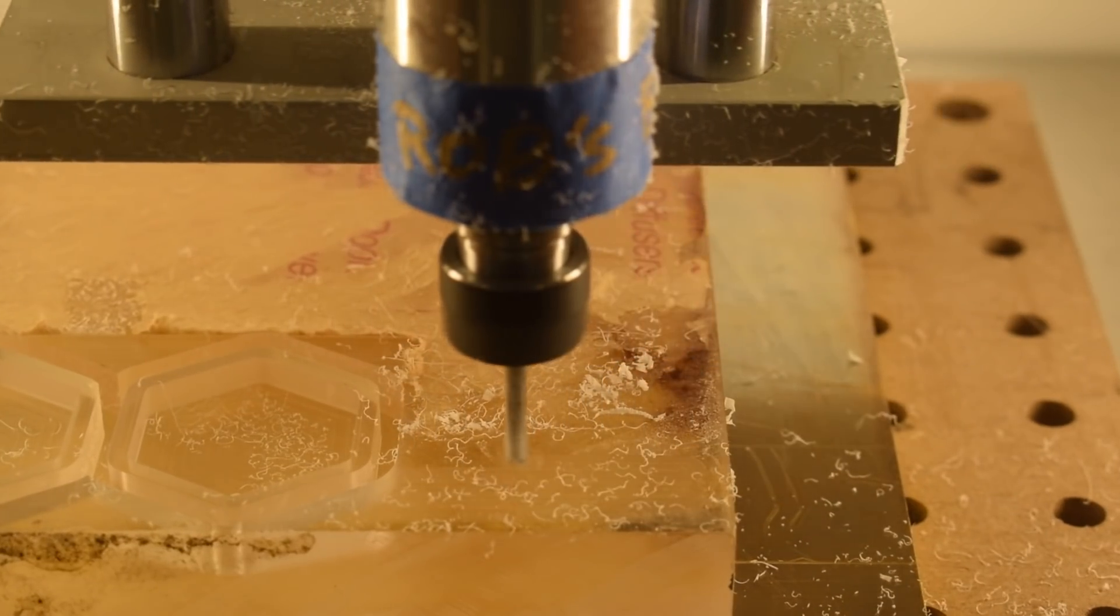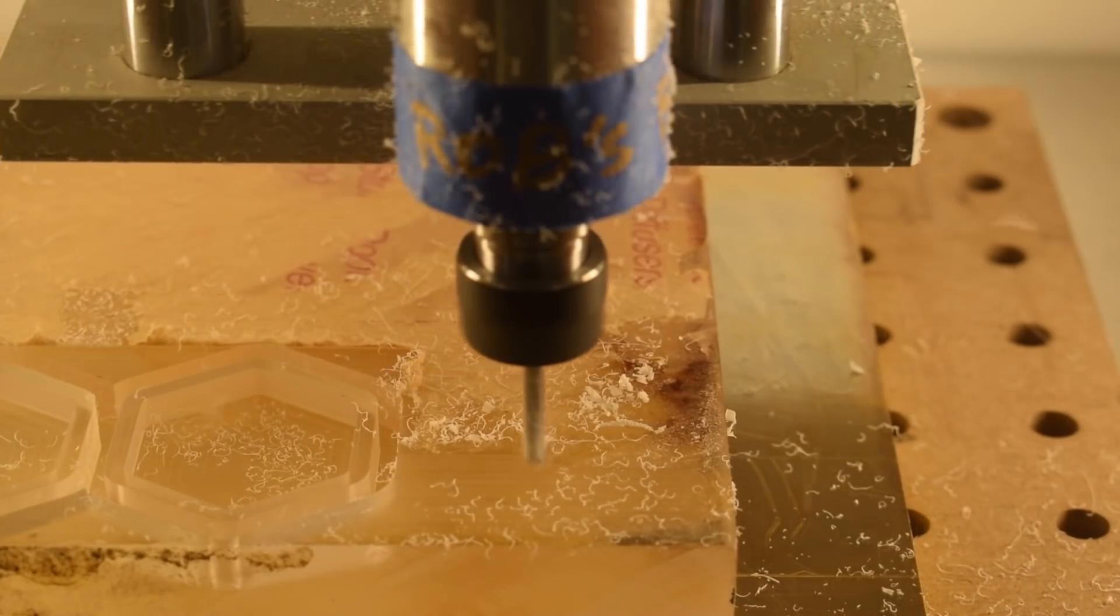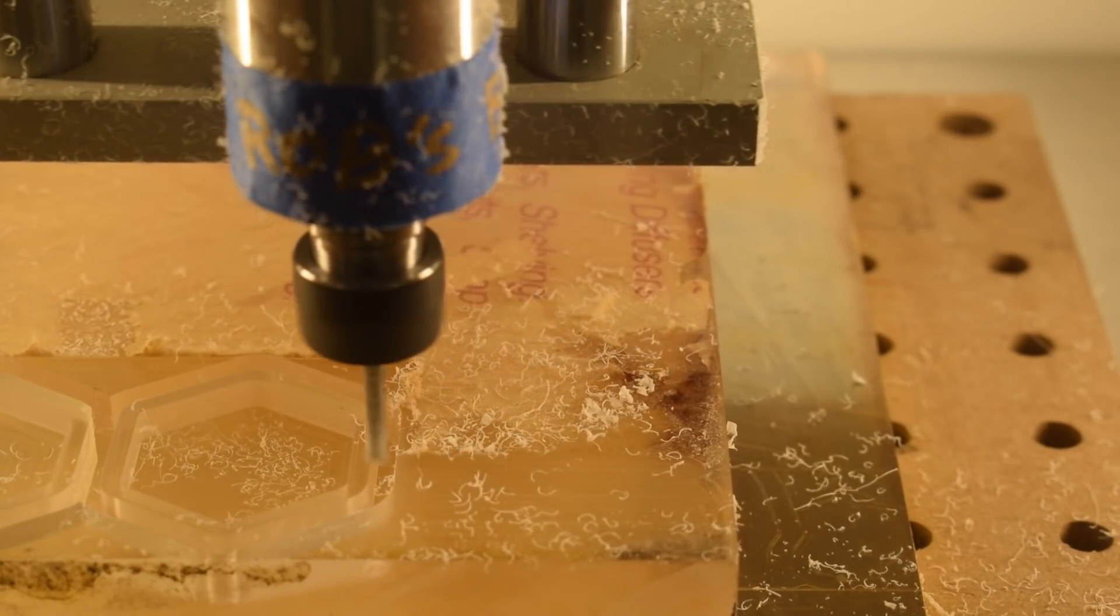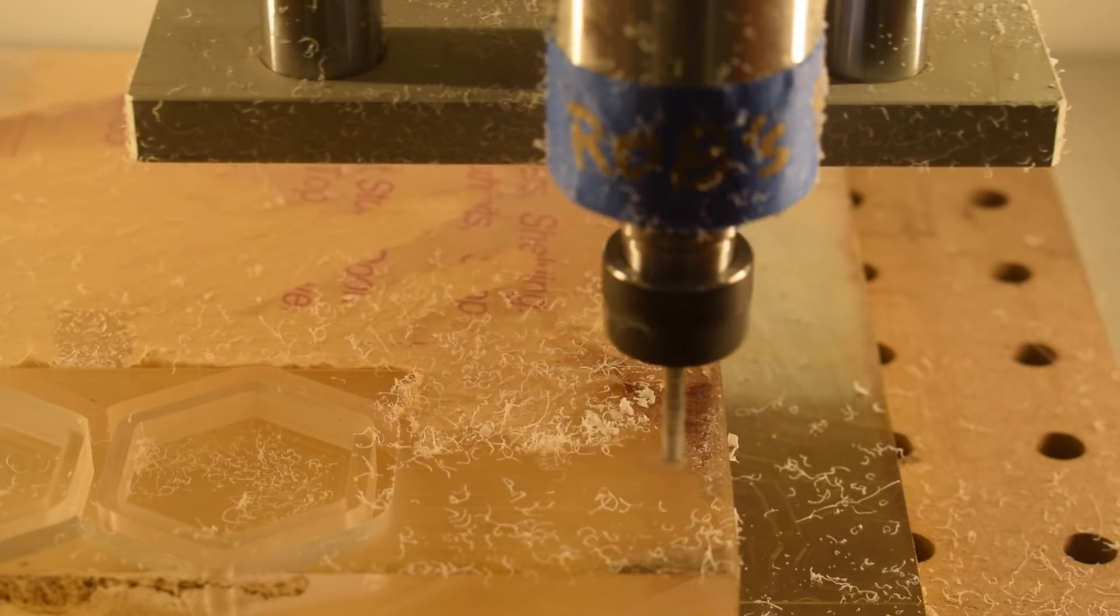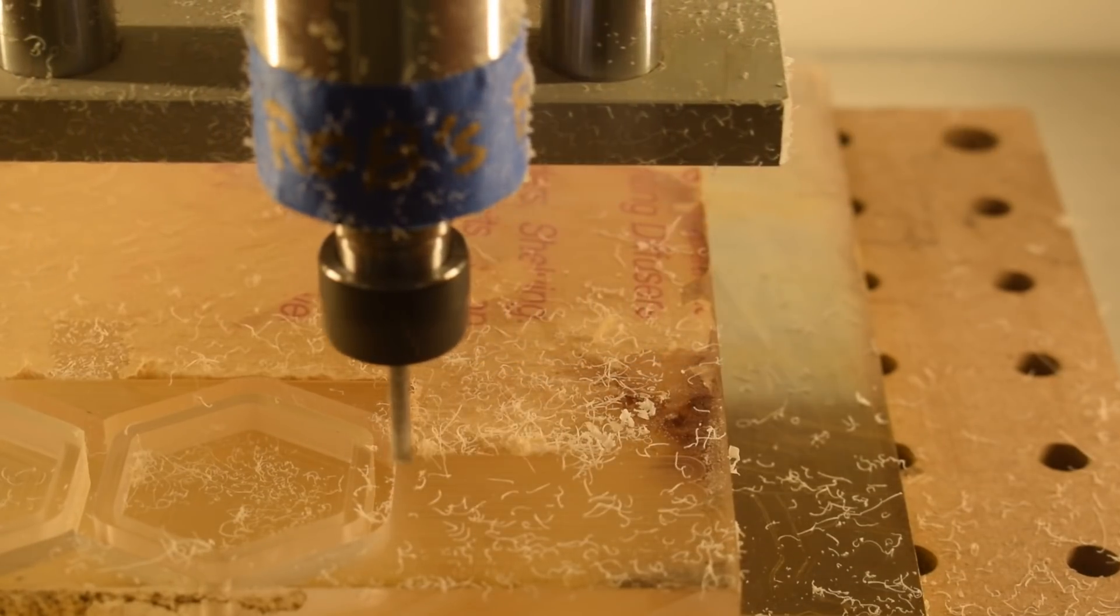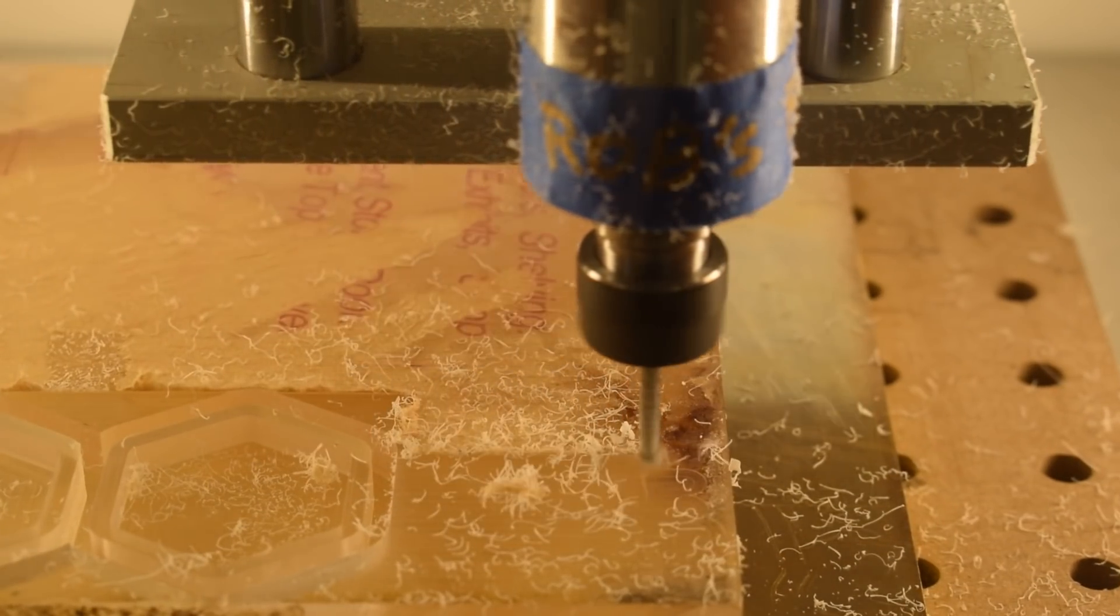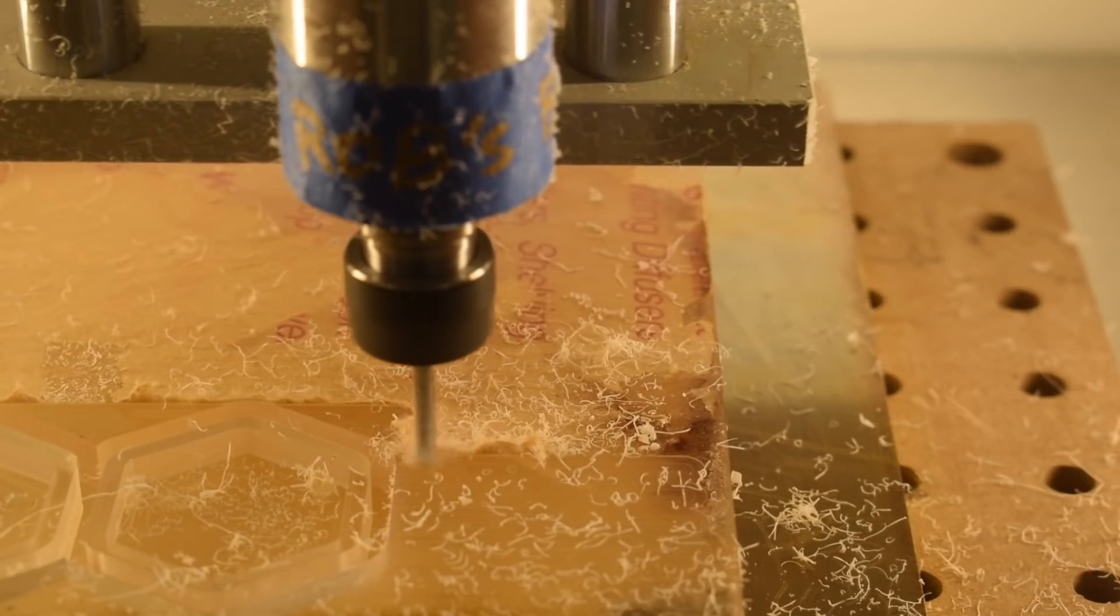Today on the Nomad, I've got cast acrylic on the cutting board. Compared to the extruded flavor of acrylic, it's better for subtractive manufacturing purposes because it can get a couple degrees hotter before it softens to the point of being unworkable. Here are some recipes you can use with our 102 two flute end mill.